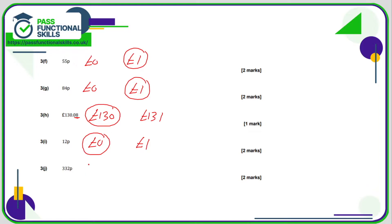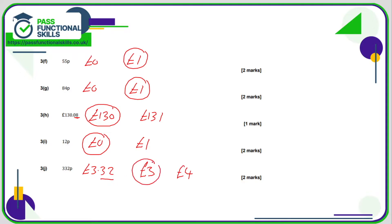332 pence — first turn that into three pounds thirty-two, so that's between three and four pounds. 32 pence is less than 50 pence so that rounds down to three pounds.